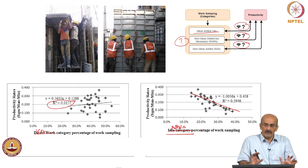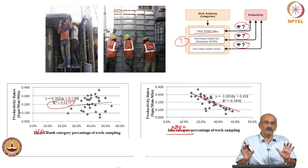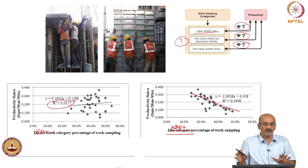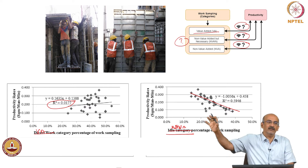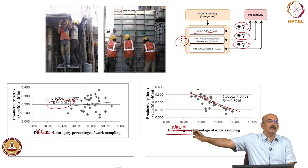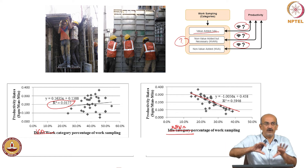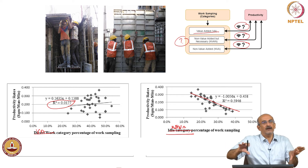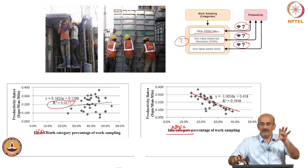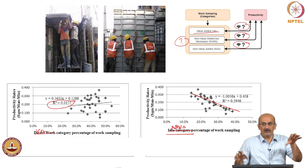Again looking at work sampling — it is meant to complement the productivity measurement system. And all of this is meant to complement finally the project management system of CPM, earned value, and so on. All of them work in sync — not this or this or this in isolation.